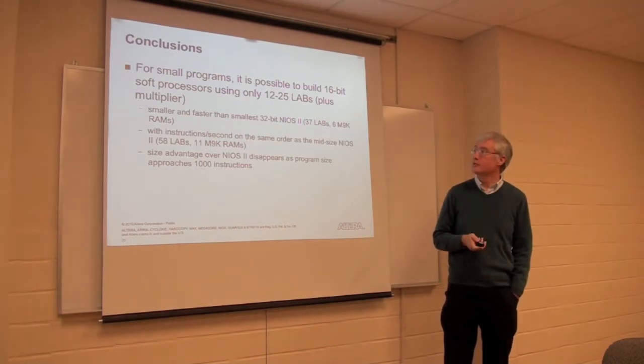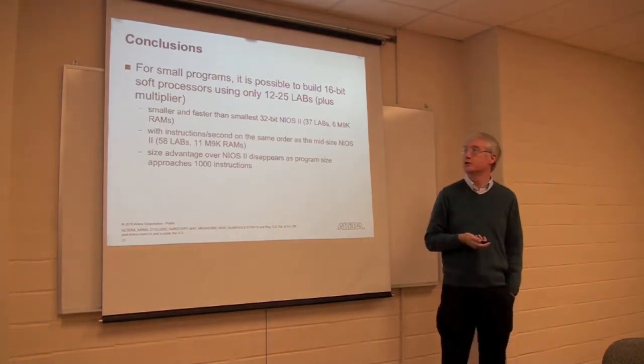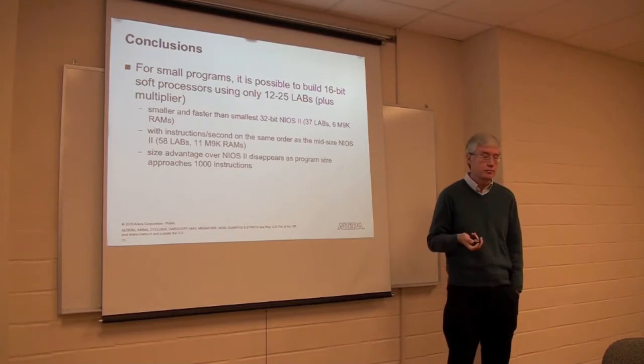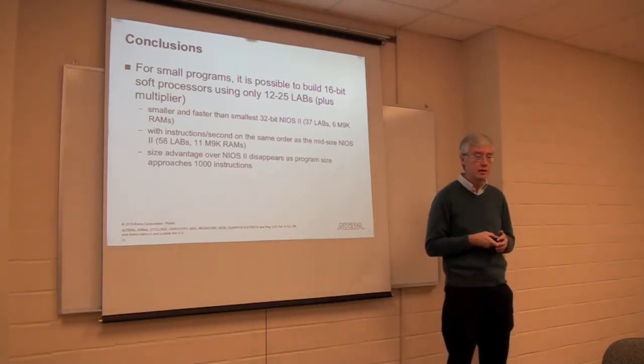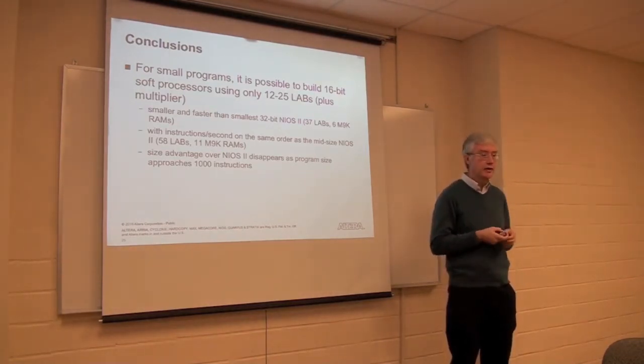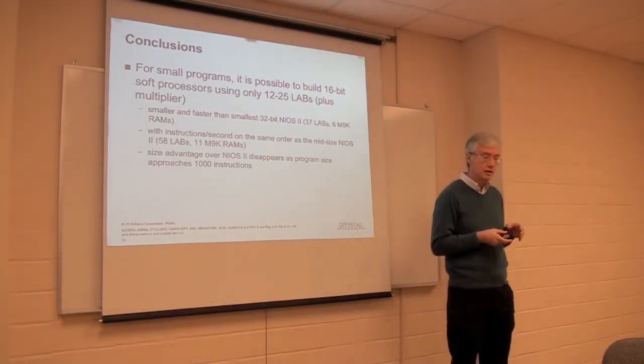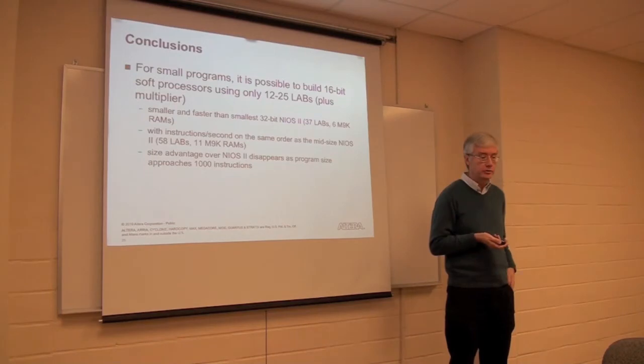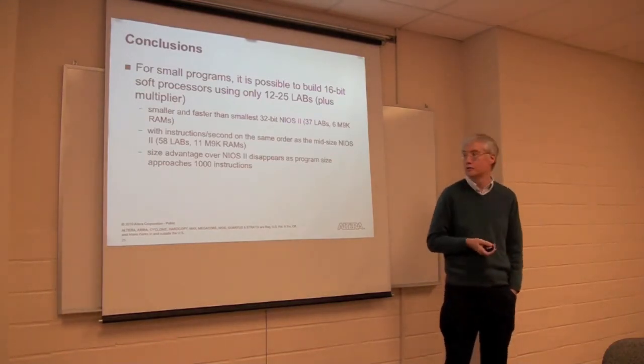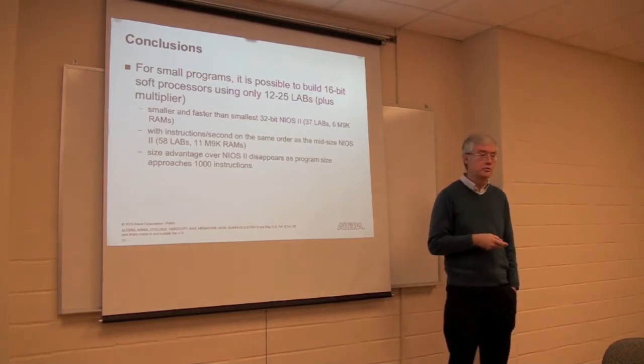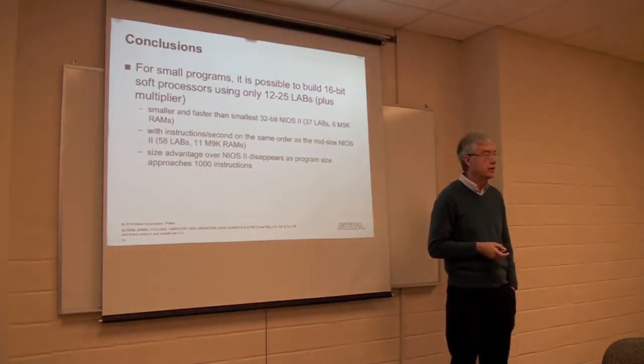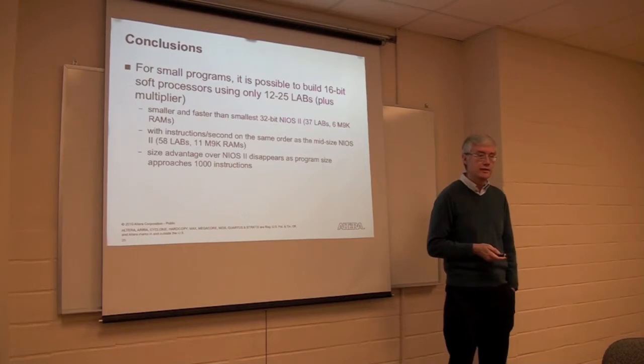So this is the last slide. So for small programs, it is possible to generate a soft processor that's small, from 12 to 25 labs, plus the multiplier. And this will be smaller and faster than the smallest NIOS 2. And it's going to be approximately the same speed, or at least the same instructions per second, as the sort of the default NIOS 2. But the size advantage that we're getting here will totally evaporate once you approach about a thousand instructions. Beyond that, it's just not worth doing. So that's it. Are there any questions?